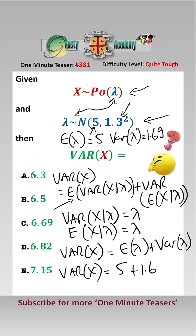Therefore the variance of X is equal to 5 plus 1.69, which is 6.69, answer C.